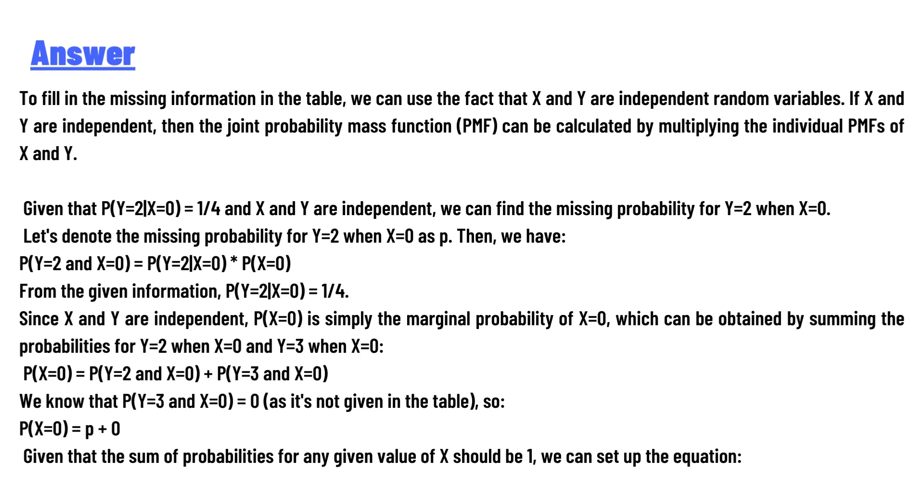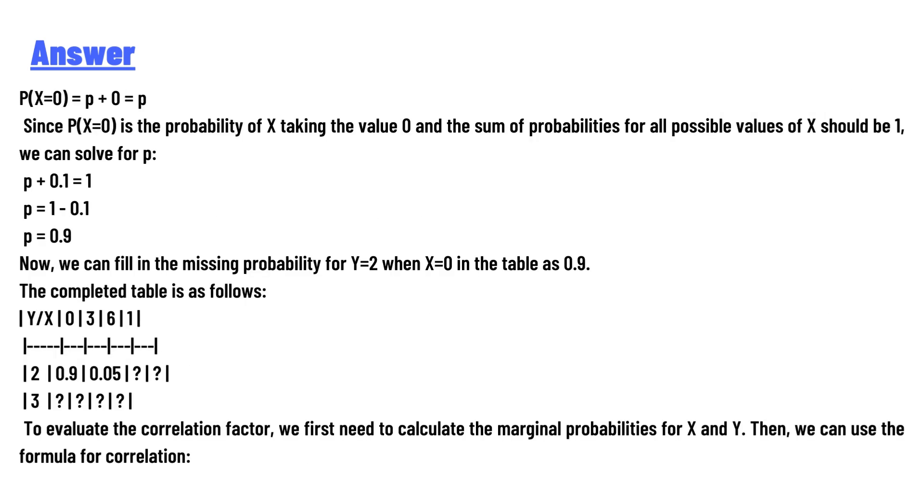We know that P(Y=3 and X=0) = 0 as it's not given in the table. So P(X=0) = p + 0 = p. Since P(X=0) is the probability of X taking the value 0 and the sum of probabilities for all possible values of X should be 1, we can solve for p.